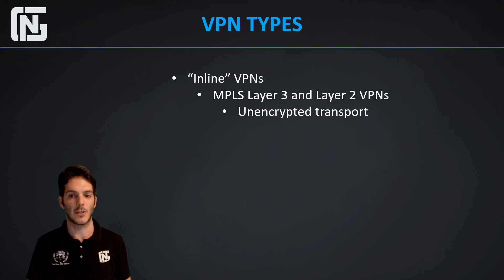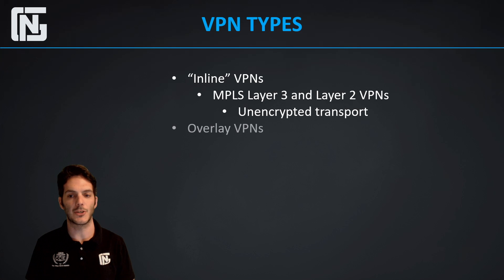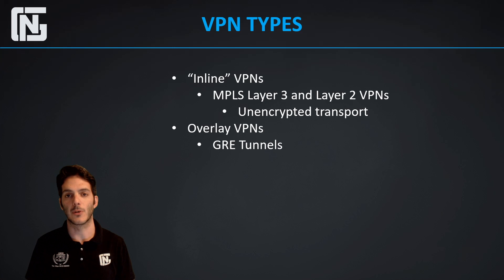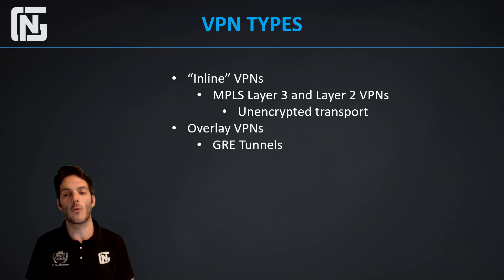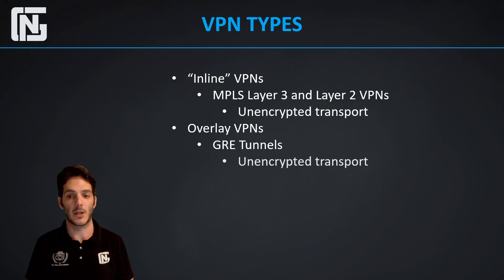These inline traffic types are unencrypted — they are private but not encrypted. That's different from overlay VPNs. The simplest overlay VPN is GRE, or generic routing encapsulation tunnels. GRE tunnels allow you to connect over any type of transport — whether internet, MPLS, 4G LTE, or other — and overlay the connection. GRE is also unencrypted transport.